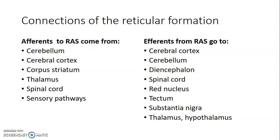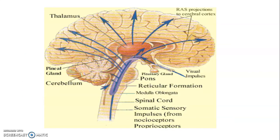Afferents to the reticular formation come from the cerebellum, cerebral cortex, corpus striatum, thalamus, spinal cord, and sensory pathways. Efferents from reticular formation go to the cortex, cerebellum, diencephalon, spinal cord, red nucleus, tectum, superior and inferior colliculi, substantia nigra, thalamus, and hypothalamus.